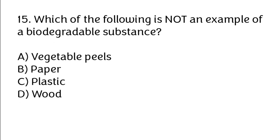Which of the following is not an example of a biodegradable substance? A. Vegetable peels, B. Paper, C. Plastic, D. Wood. Correct answer is C. Plastic.